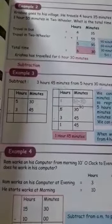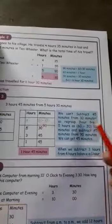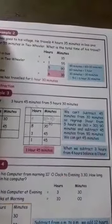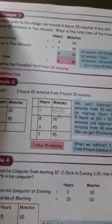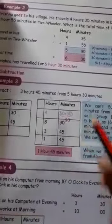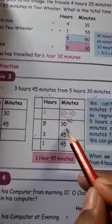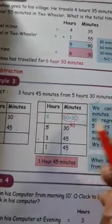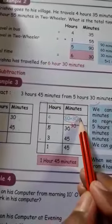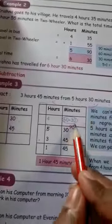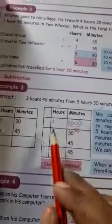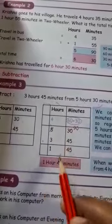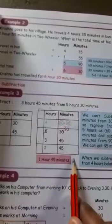Because 1 hour equals 60 minutes, we cannot subtract 45 minutes from 30 minutes directly. So we regroup 1 hour from 5 hours, which gives us 60 minutes. We add 60 and 30 to get 90 minutes. Now 90 minus 45 equals 45 minutes. And 5 minus 1 minus 3 equals 1 hour. So the answer is 1 hour 45 minutes.